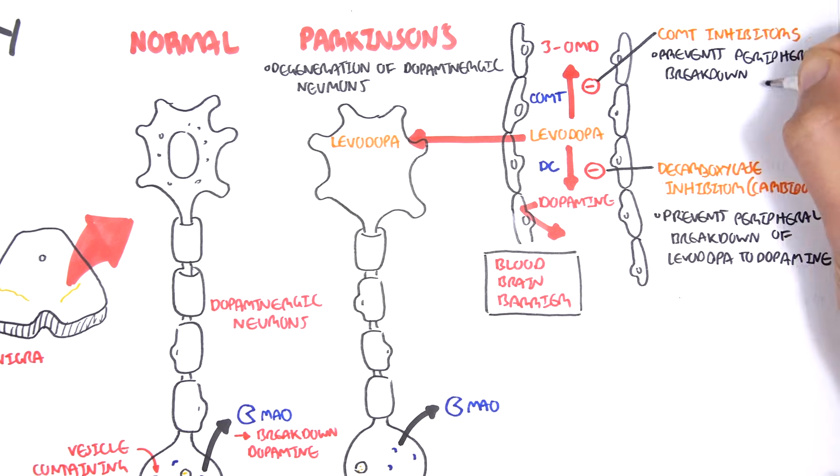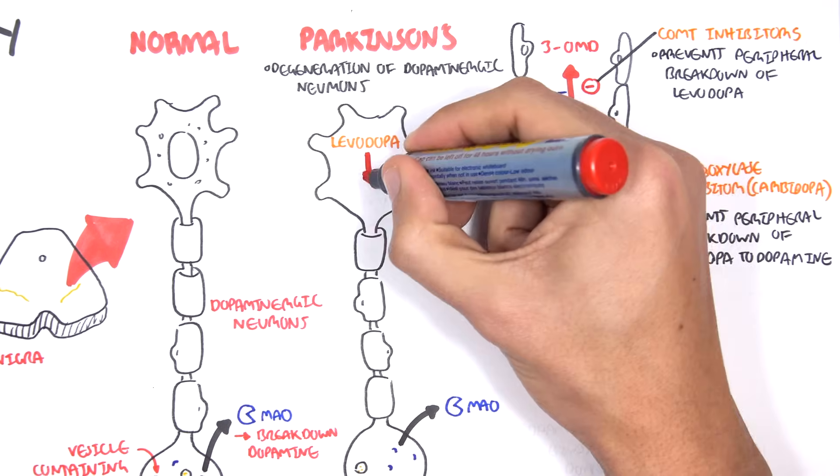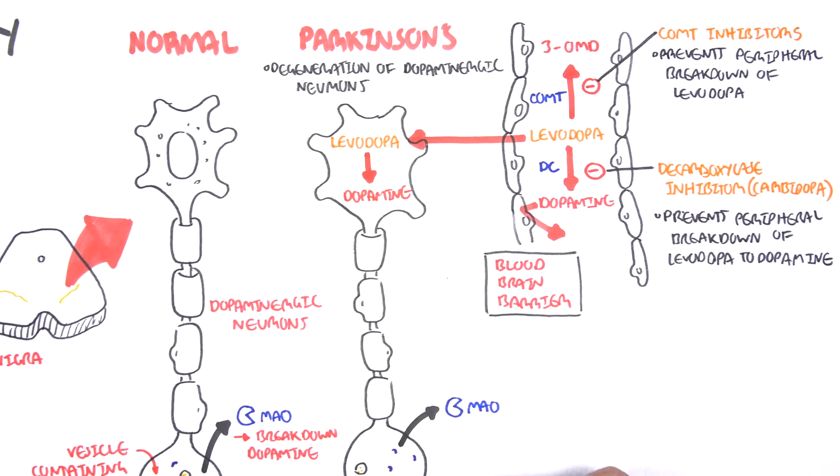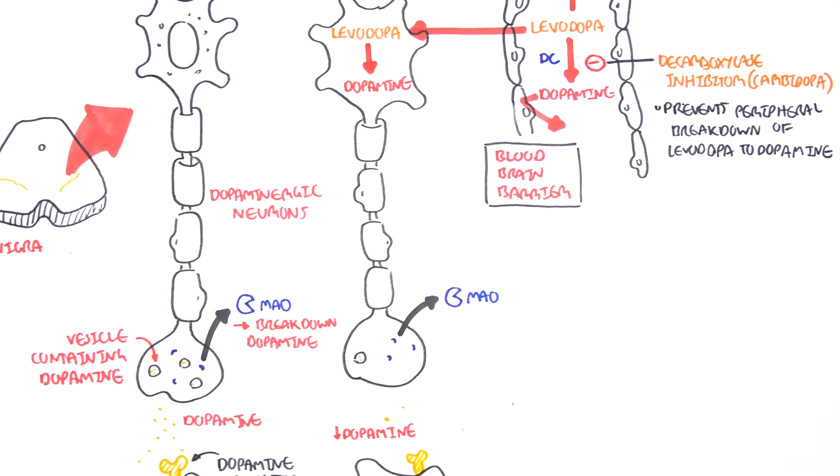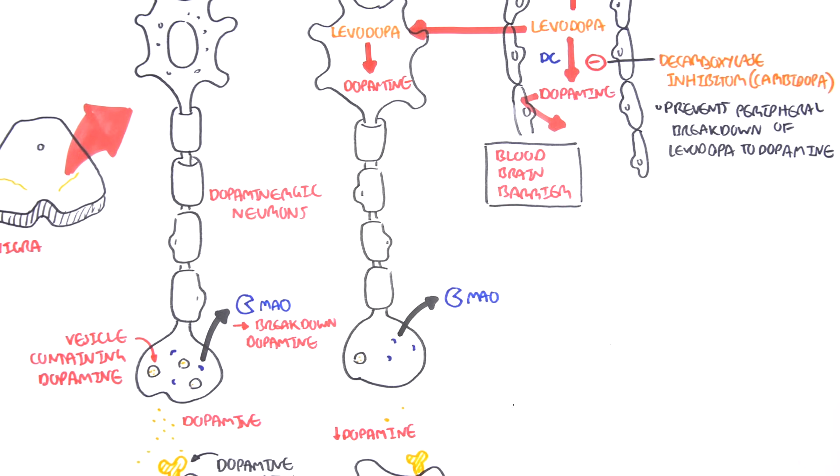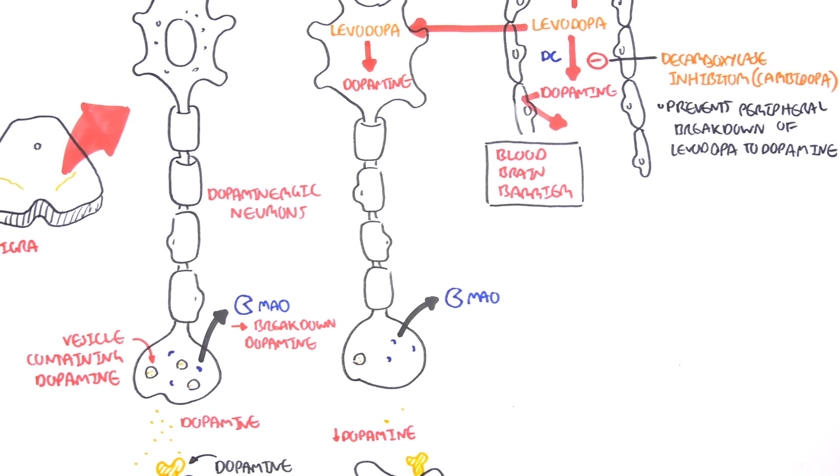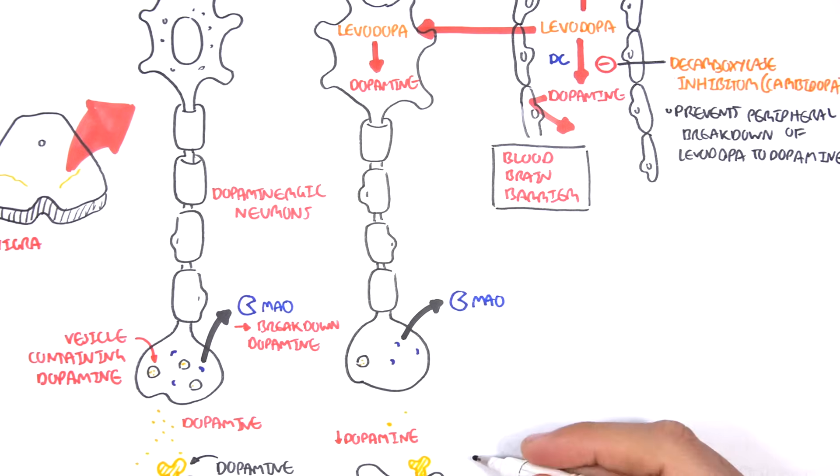Levodopa is able to pass the blood-brain barrier into the dopaminergic neurons. In the neurons, levodopa can be converted to dopamine by dopamine decarboxylase. So this neuron is able to produce and release more dopamine, lessening the signs and symptoms of Parkinson's disease.